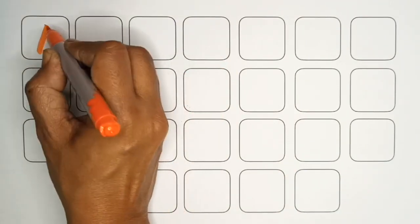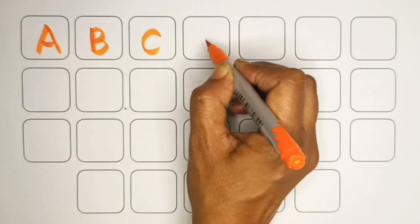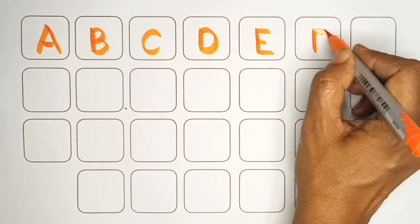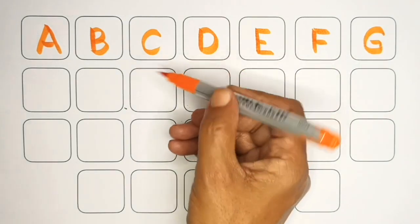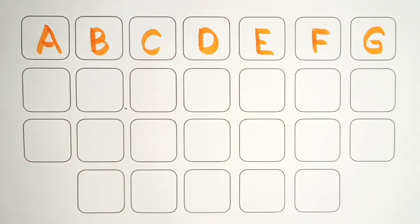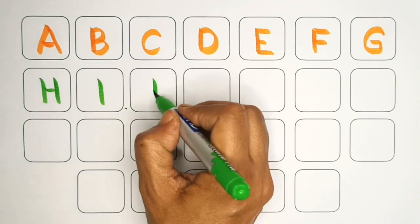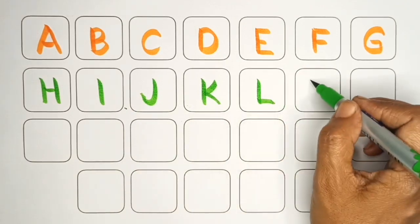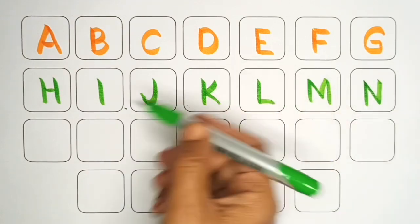A, B, C, D, E, F, G. Orange colour. H, I, J, K, L, M, N. Green colour.